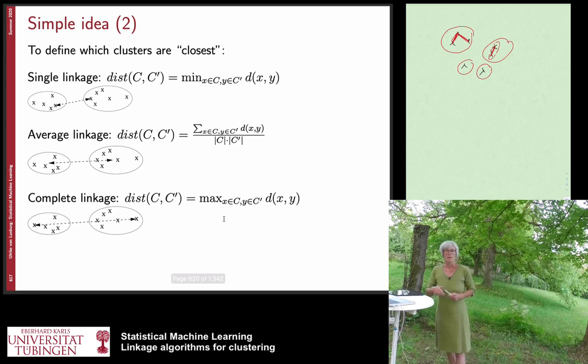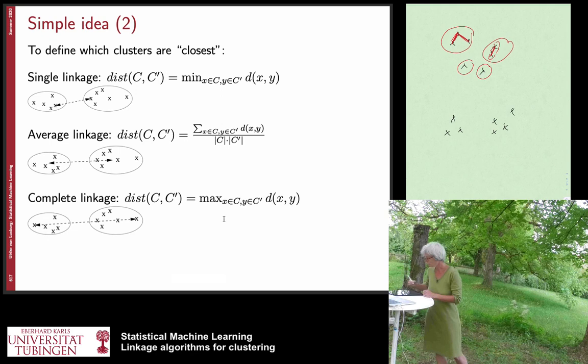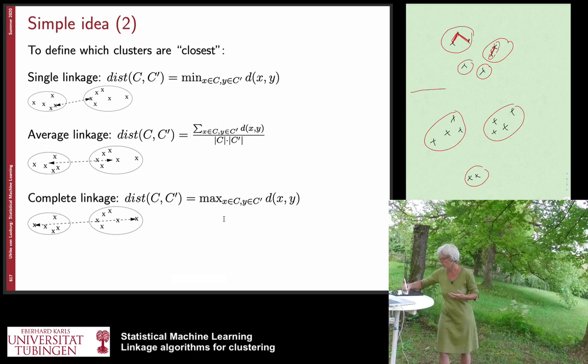If you formally want to write it up, there is one specific thing that you need to fix: how do you define the distance between two different clusters? Assume we have these points, and we have one more cluster here. Assume we are in a state of the algorithm where these points, and these points, and these points have already been merged into a cluster, so we now have three clusters. The question is which of them to merge next — we need to define the distance between any two of these clusters.